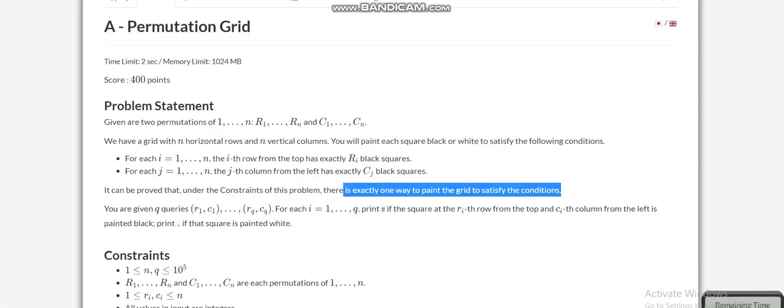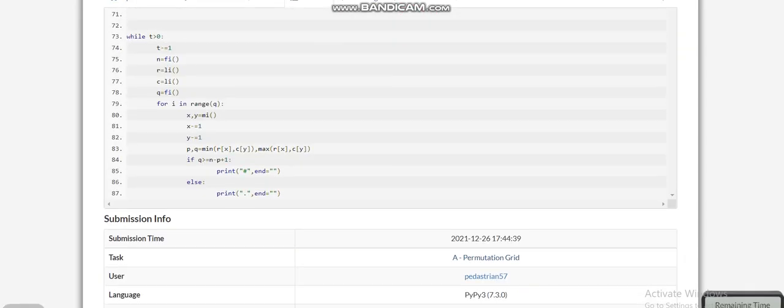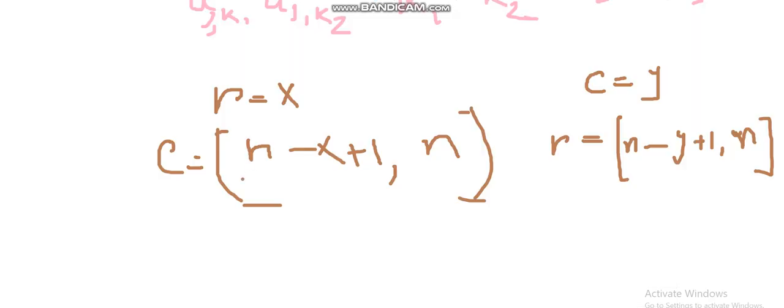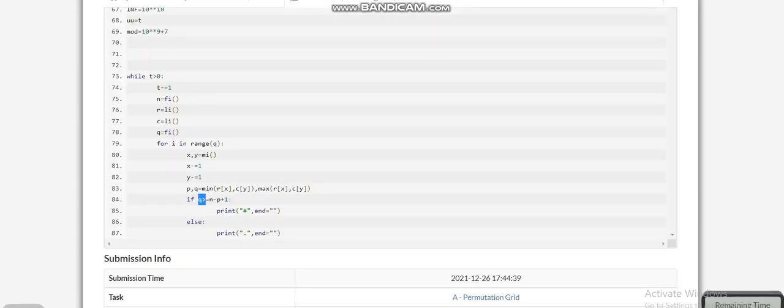Let me go to the code to explain you. Here I have taken inputs. X comma Y, I have converted into zero-based indexing. And we are taking minimum of R_x, C_y and maximum of R_x, C_y. If Q is greater than or equal to N minus P plus 1, then our answer will be black. Else, our answer will be white.